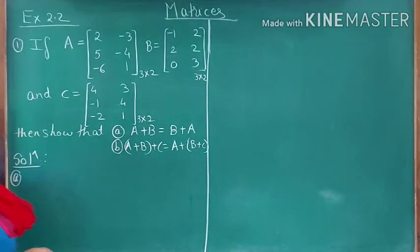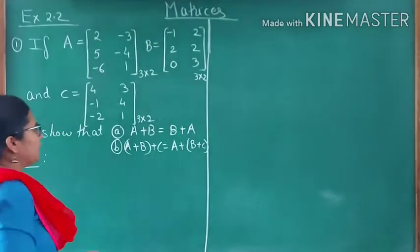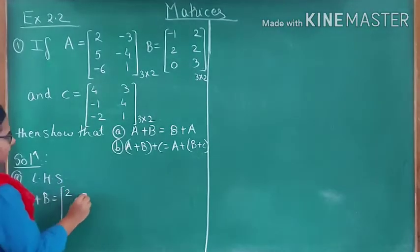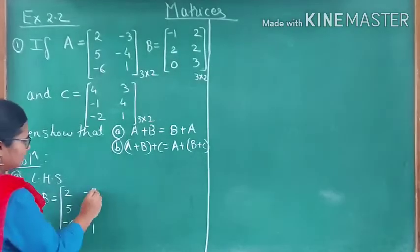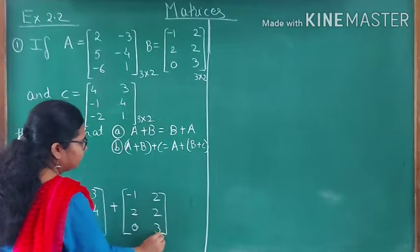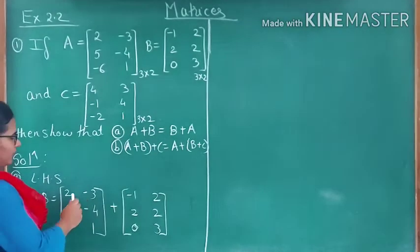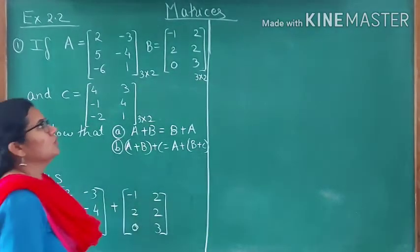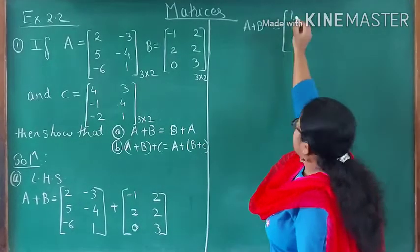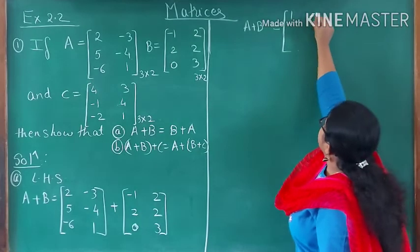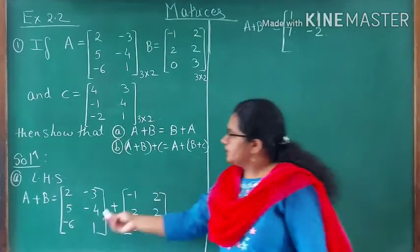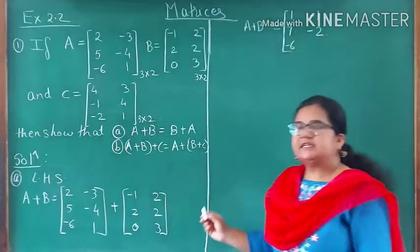Let us start with the first property: A plus B equals B plus A. Take matrix A: [2, -3; 5, -4; -6, 1] and add matrix B: [-1, 2; 2, 2; 0, 3]. Adding corresponding elements: 2+(-1)=1, -3+2=-1, 5+2=7, -4+2=-2, -6+0=-6, and 1+3=4. So A plus B gives the matrix [1, -1; 7, -2; -6, 4]. Name this as step one.